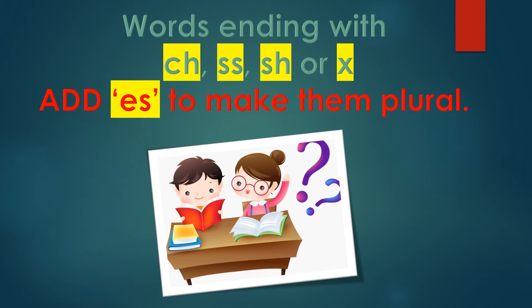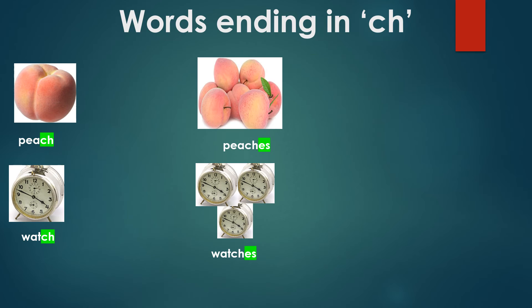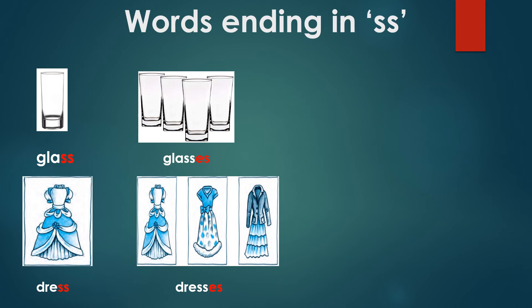Let us see examples one by one so that this rule becomes easier to understand. First we will see the rule of CH. Words ending with CH — you should add ES at the end to make them plural. One peach, many peaches. One watch, many watches. Similarly, words ending in SS: one glass, many glasses.